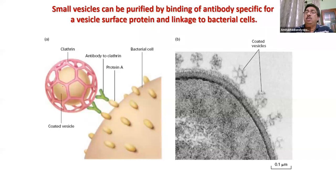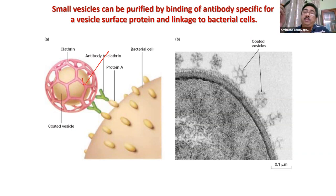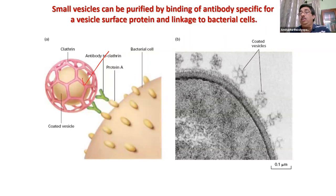You can also capture small vesicles through antibody trapping. You use an antibody against a cell surface molecule — for example, an antibody against clathrin — and then add Protein A coupled to Sepharose. Protein A is a bacterial protein that can bind any antibody. So Protein A will bind to the antibody, the antibody is bound to the cell surface, and the whole thing including the coated vesicle can come down, allowing you to isolate it.